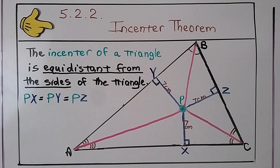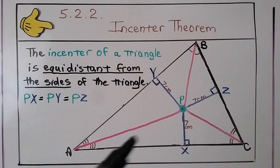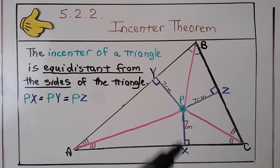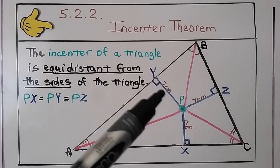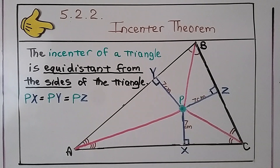For your notes, that brings us to theorem 5.2.2, the In-Center Theorem: the in-center of a triangle is equidistant from the sides of the triangle. So point P — Px is 7 centimeters, Py is 7 centimeters, and Pz is 7 centimeters. The in-center of a triangle is equidistant from the sides of the triangle.